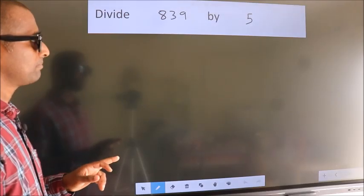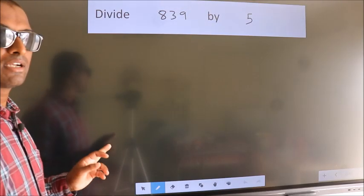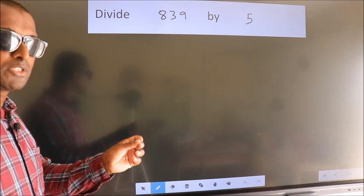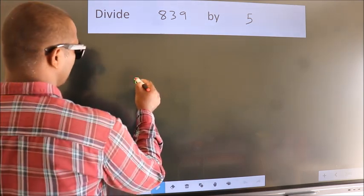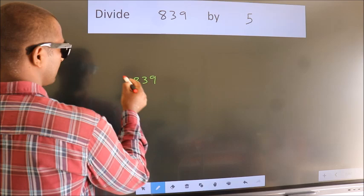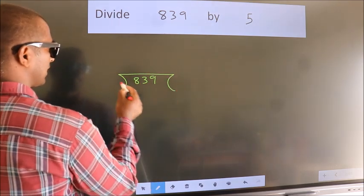Divide 839 by 5. To do this division, we should frame it in this way: 839 here, 5 here.